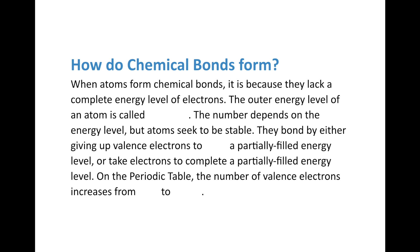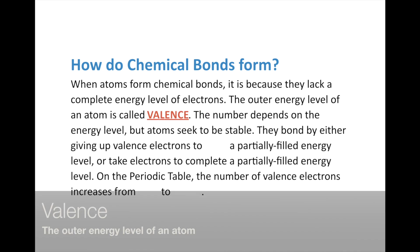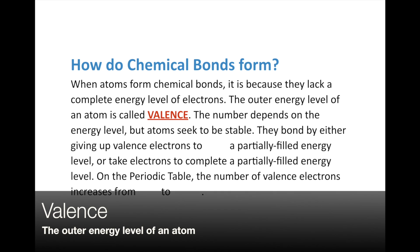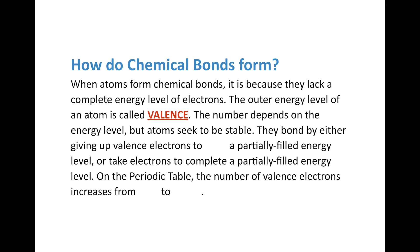When atoms form chemical bonds, it's because they lack a complete energy level of electrons. The outer energy level of an atom is what we call valence, and the electrons in that energy level are what we call valence electrons — this is really important. For middle school, we just need to know what valence is; in high school, we get really in-depth into valence electrons. The number of valence electrons in the outer energy level depends on the energy level: the first one holds two, the second one holds eight. Atoms seek to be stable — they either want to have a full valence energy level or nothing at all in the outer energy level.